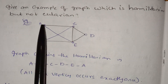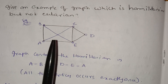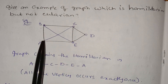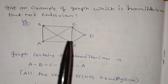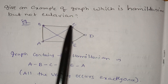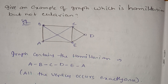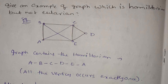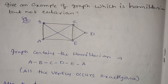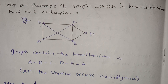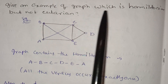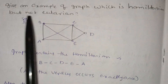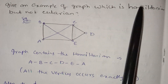Here, for Eulerian analysis: A is not a vertex with even degree, B is not, and vertex 3 is not. We have vertices with odd degree. Odd plus even is odd. So we need to give an example of a graph which is Hamiltonian but not Eulerian.